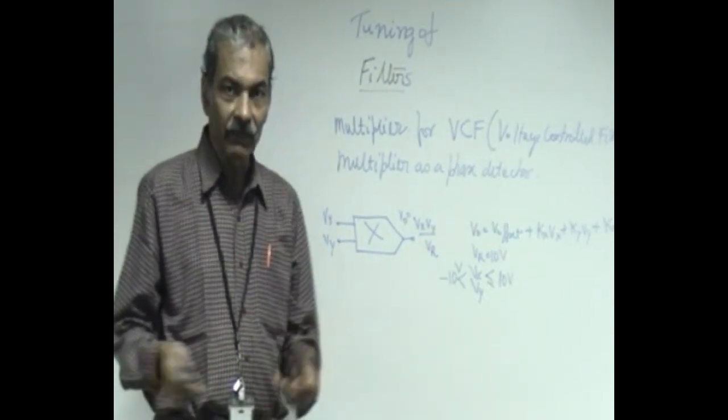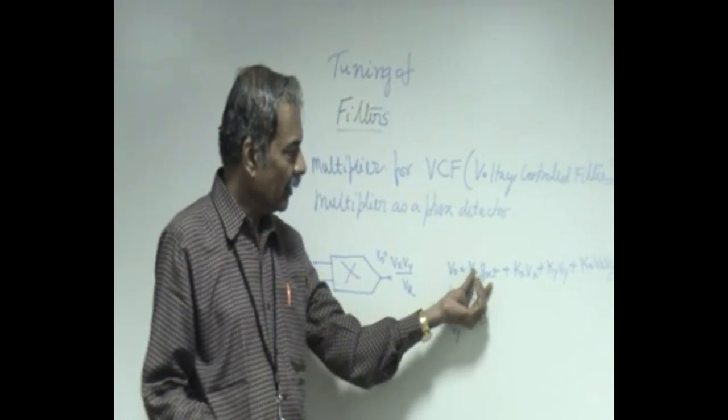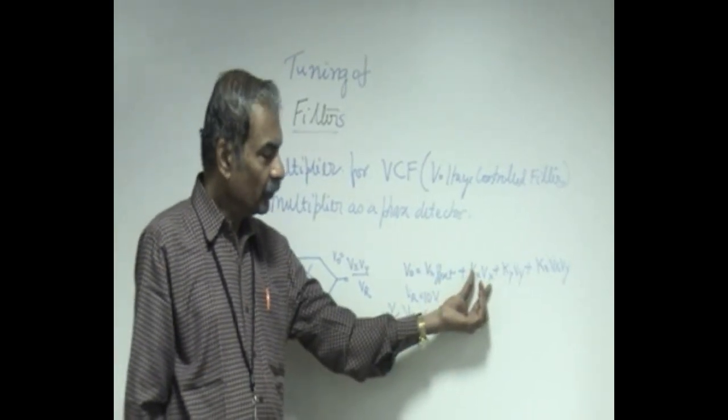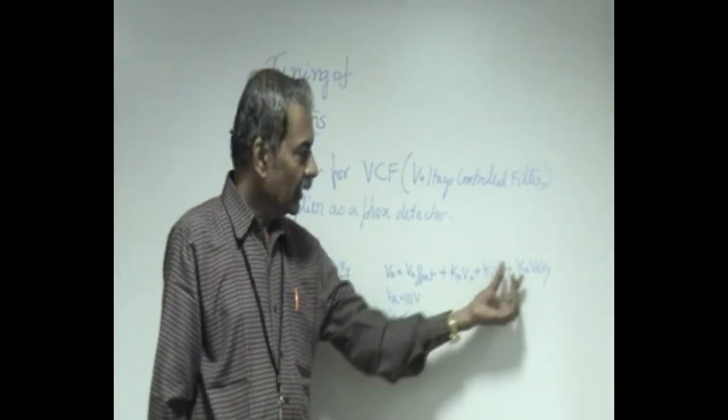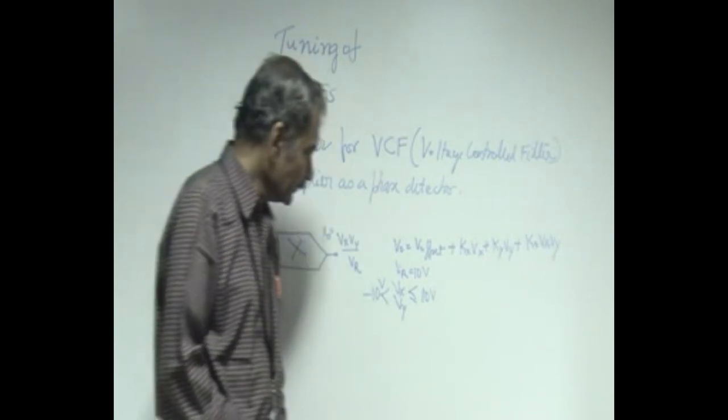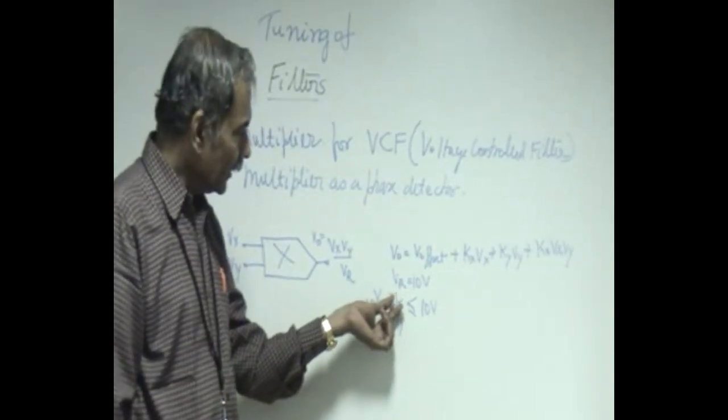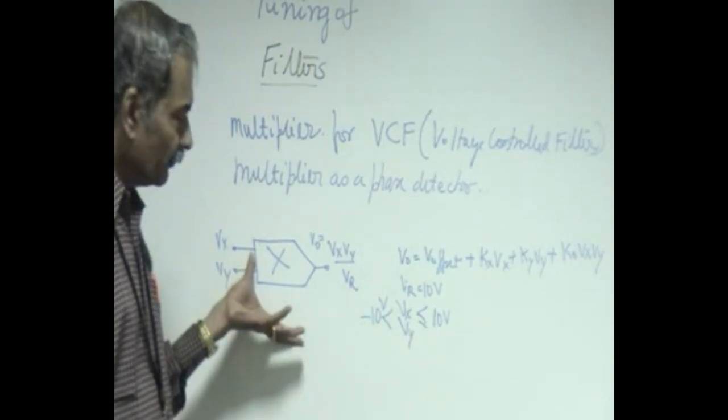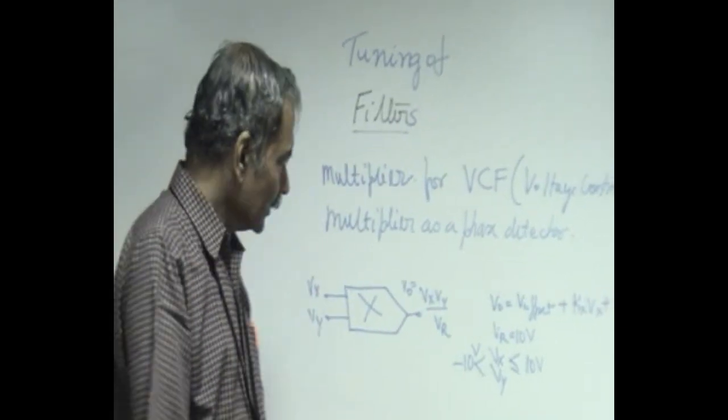A standard multiplier has v_r as 10 volts and actual multiplier has certain non idealities, it has a part which is independent of the two inputs that is called offset voltage and then a part which is proportional to one of the inputs that is called feed through component due to x and feed through component due to y then the wanted output k_naught into v_x times v_y where k_naught is 1 over v_r. Normally, the extent of dynamic range of the precision multiplier is designed to handle as much as the reference voltage 10 volts in this case, plus 10 volts and minus 10 volts. So, this is a four quadrant multiplier which is capable of handling a dynamic range of plus minus 10 volts.